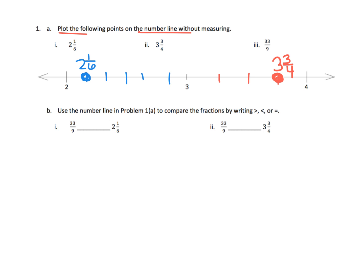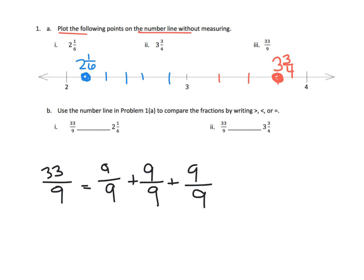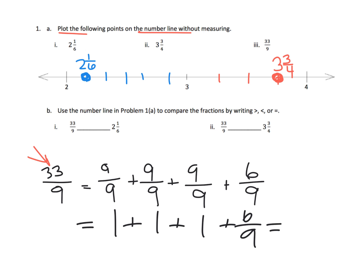Now, where would 33 ninths live? From previous work, we know that nine ninths plus nine ninths plus nine ninths equals 27 ninths, and then we have six more ninths to reach 33 ninths. So nine plus nine plus nine plus six equals 33, meaning 33 ninths equals one plus one plus one plus six-ninths — that's three and six-ninths.